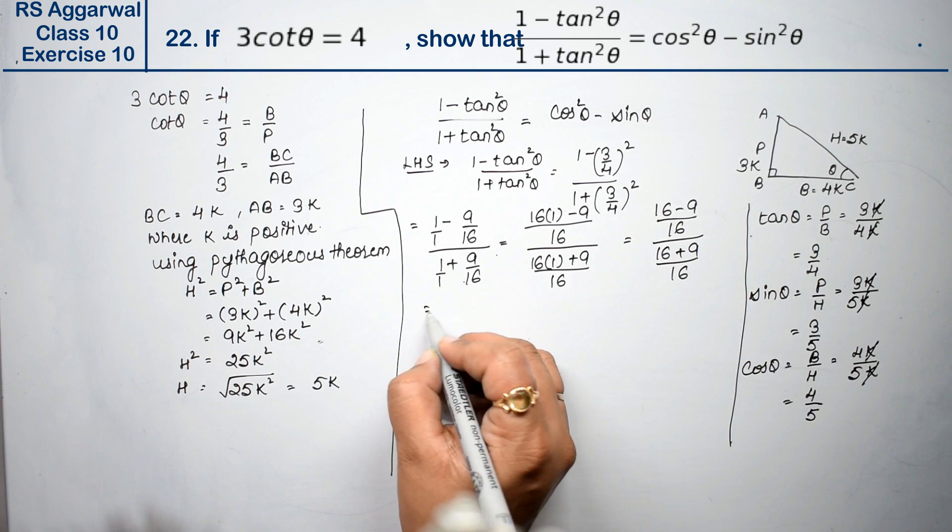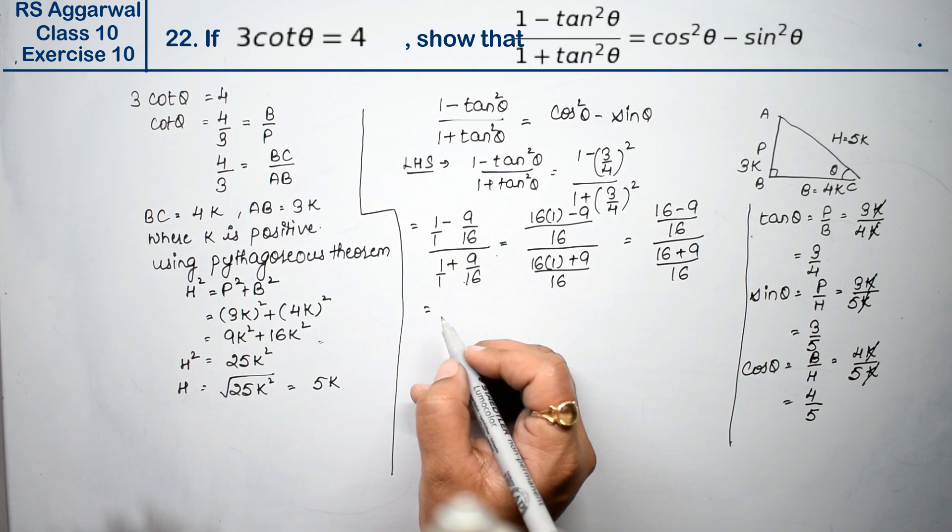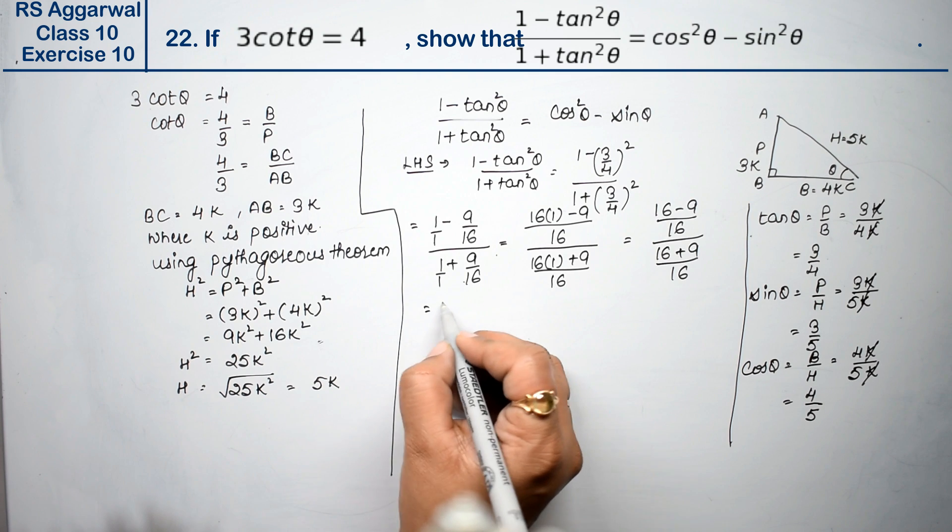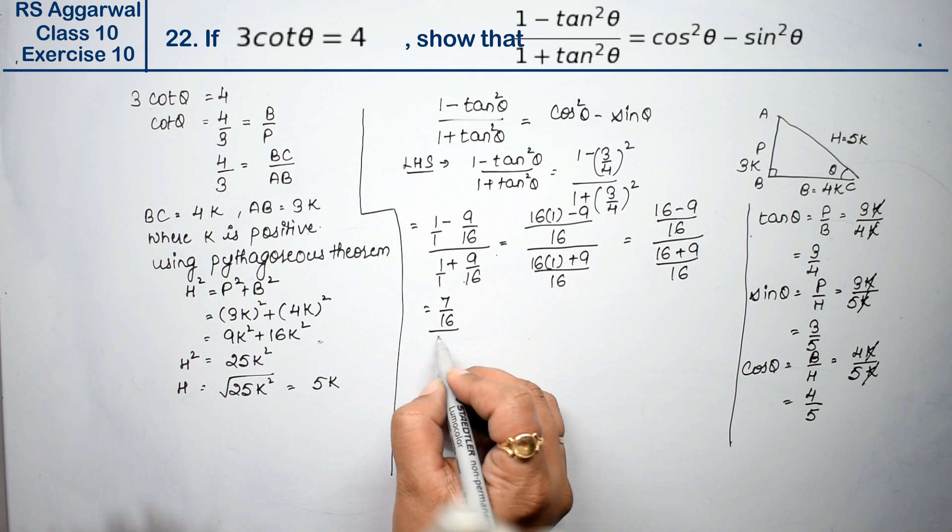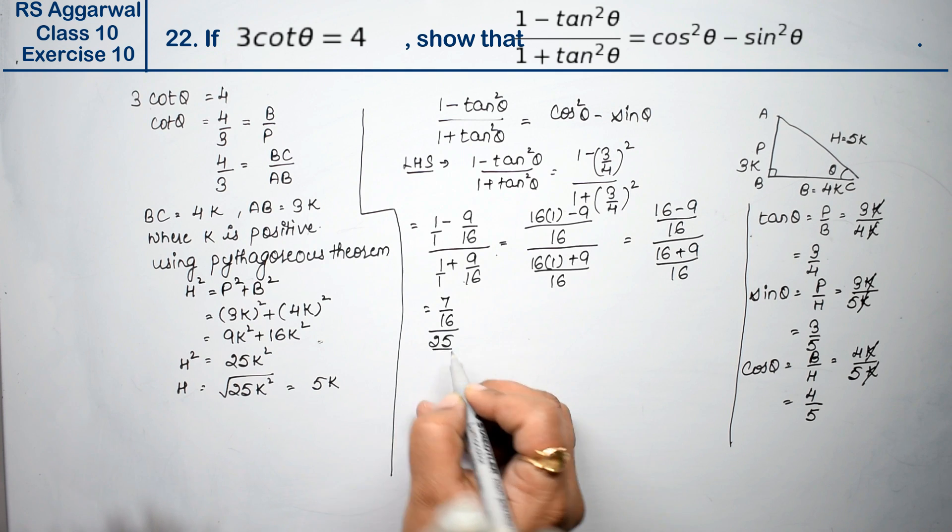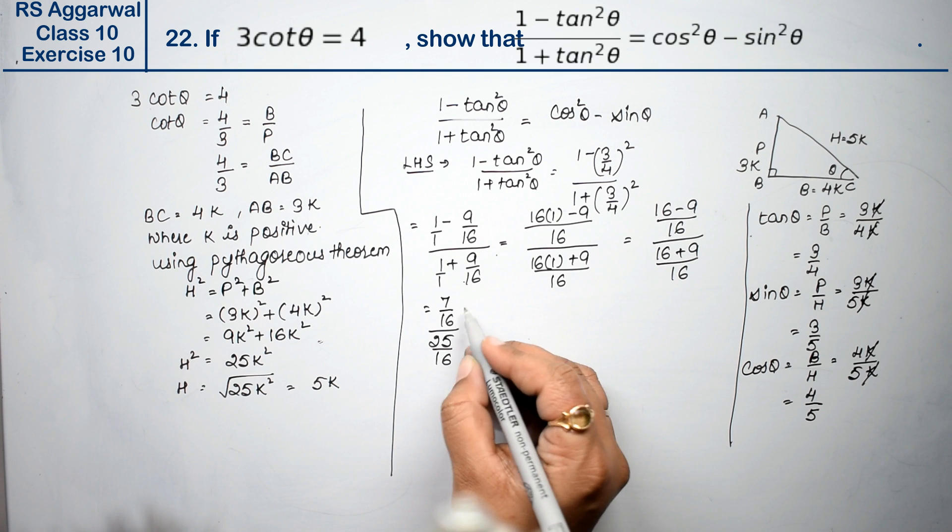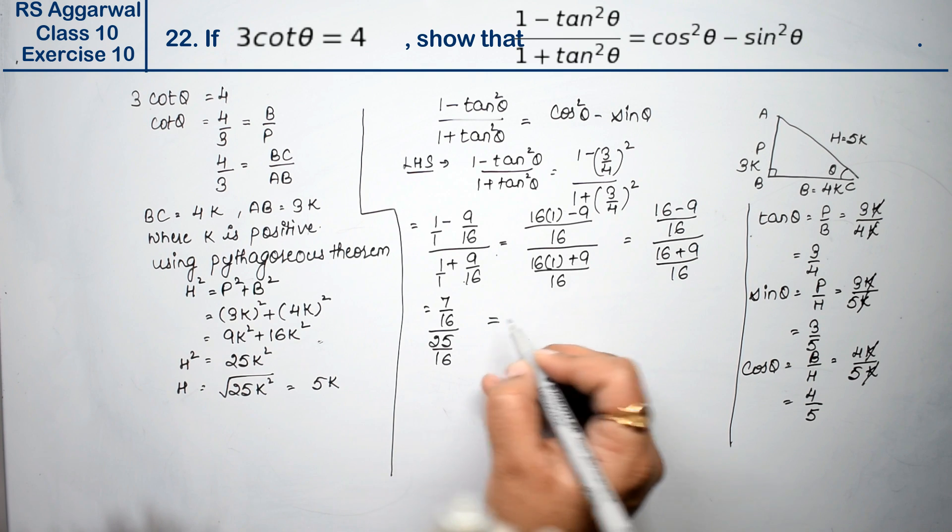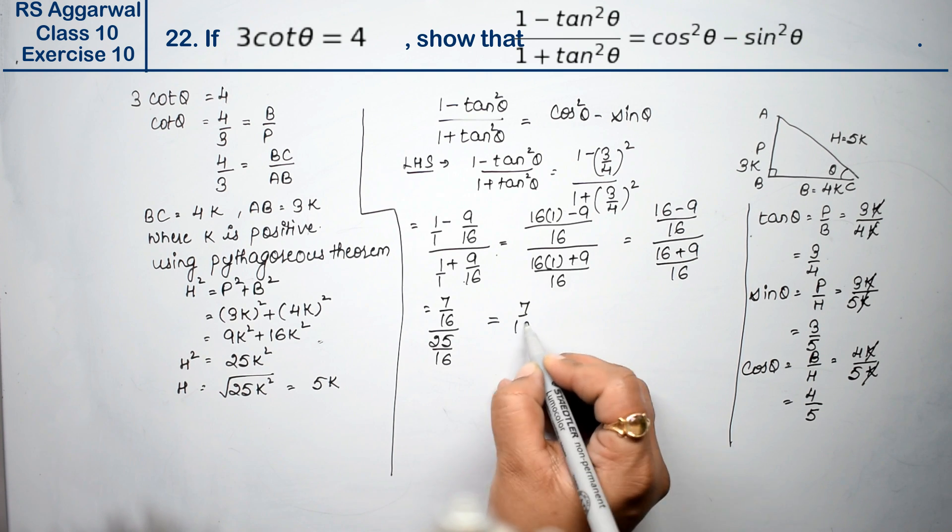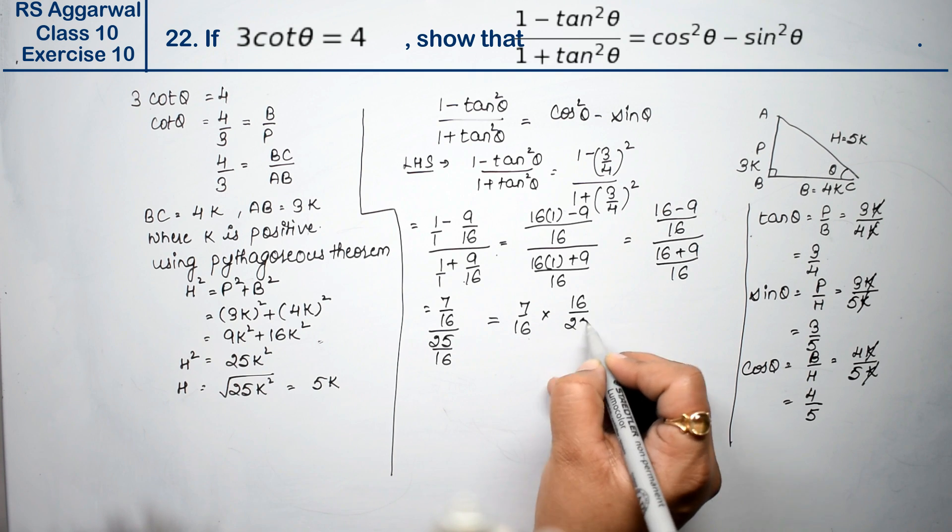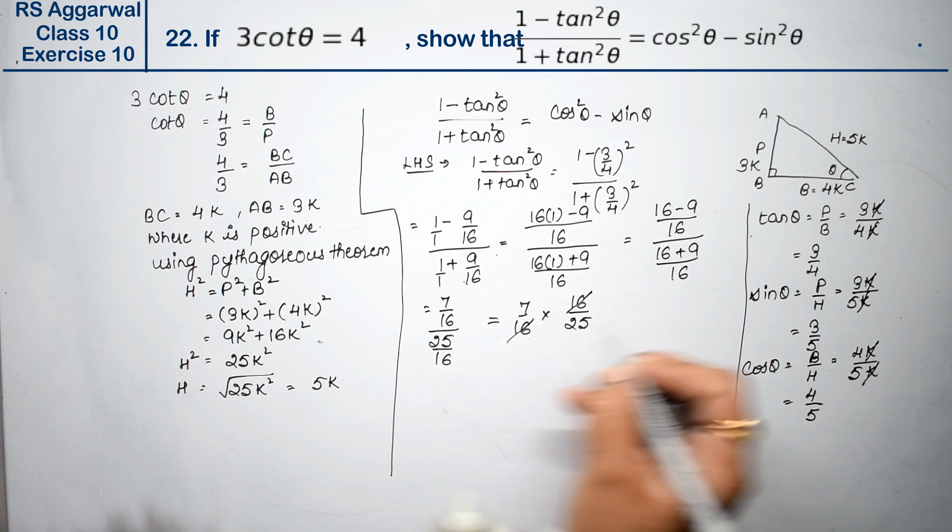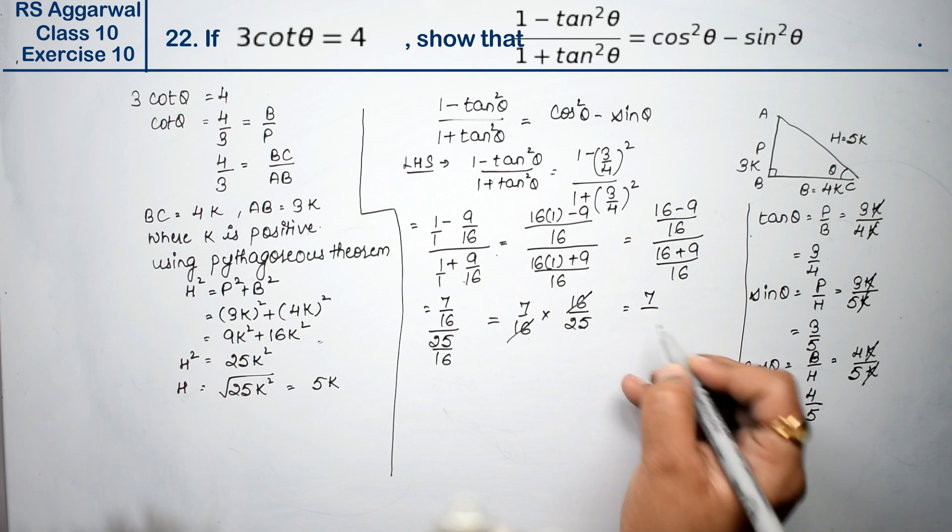So this is 7 upon 16, upon 25 upon 16. A upon B upon C upon D is A upon B into D upon C. 16 cancels. So the answer is 7 upon 25. This is left-hand side.